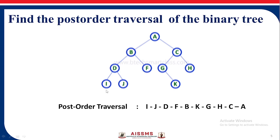Now find the post-order traversal of the binary tree. We will traverse the left subtree, then the right subtree, and lastly visit the root A. The post-order traversal sequence so far is I, J, D, F, B. Now the left subtree is completed. We move on to the right part of the tree. We get G here; checking if G has a left child — no, it does not. So we move on to get K, G, H, C, and lastly A. So the post-order traversal sequence is I, J, D, F, B, K, G, H, C, A.